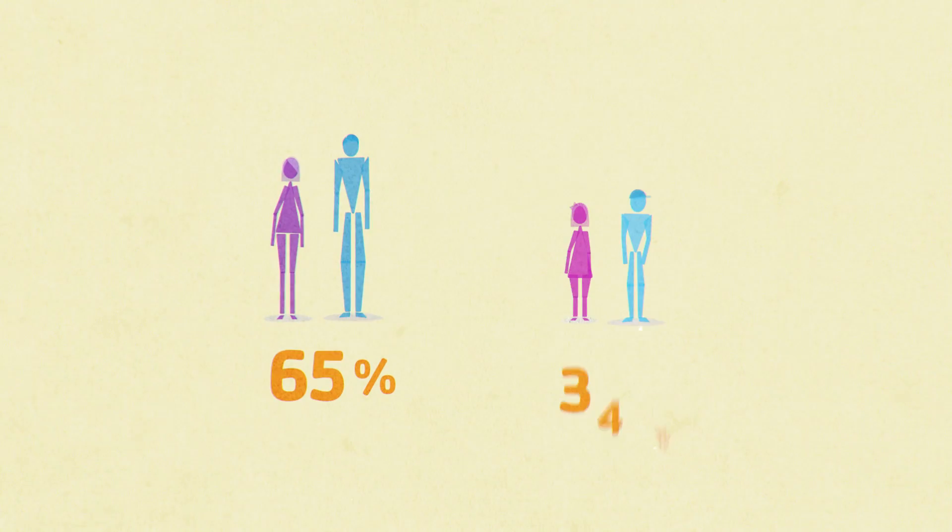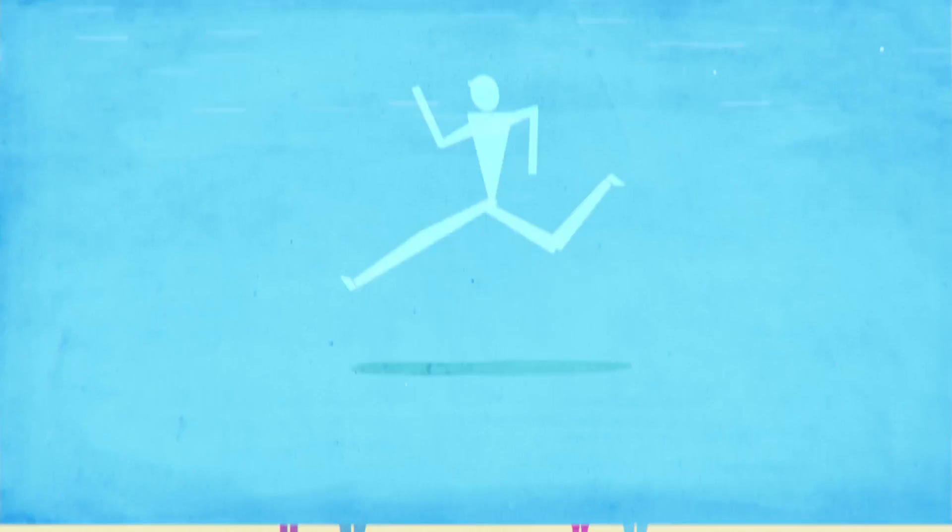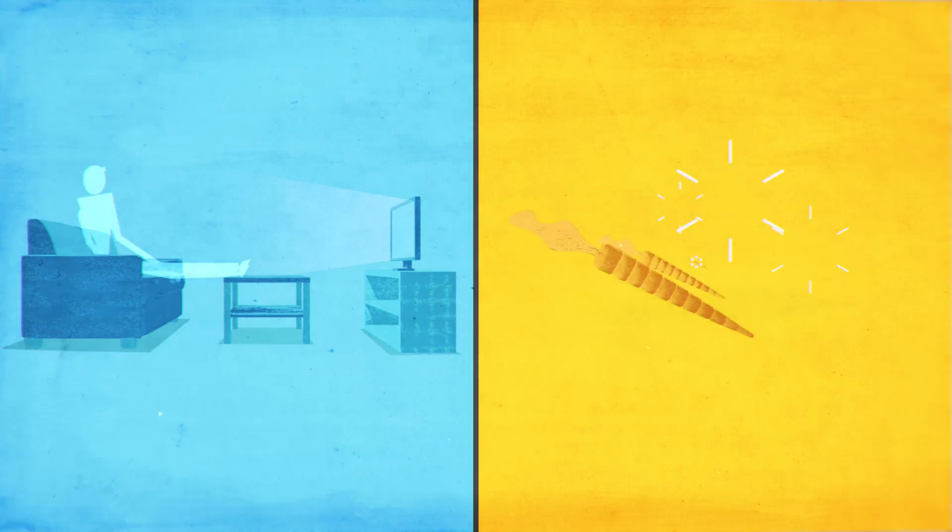The Y empowers healthy living. In Georgia, 65% of adults and 37% of children are overweight or obese, primarily due to decreased physical activity and nutritional choices.